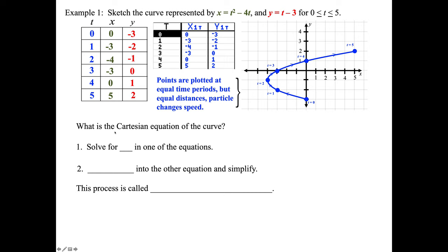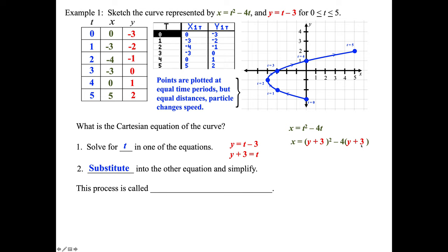The other thing we want to do is find the Cartesian equation for this graph. You want to solve for t in one of the two equations. Since there's only one t variable in y equals t minus 3, that's the one we solve for t. Then we take y plus 3, which equals t, and substitute it into the x equation. So x equals (y+3)² minus 4(y+3). After FOILing and simplifying, we get x equals y squared plus 2y minus 3. This process is called eliminating the parameter.